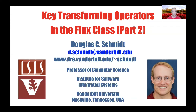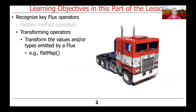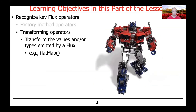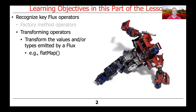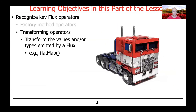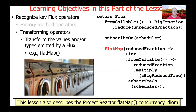We're now going to turn our attention to one of the most interesting and powerful transforming operators defined in Project Reactor's Flux class. As you may recall, transforming operators are used to transform values and/or types emitted by a Flux. In this case, we're going to take a look at the flatMap operator, and how it can be used to implement a very interesting concurrency idiom that allows various fluxes to run in parallel on a multi-core platform.